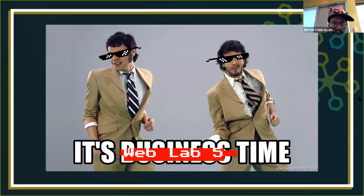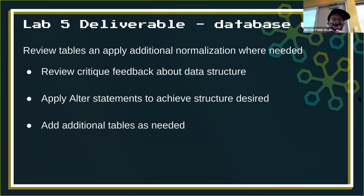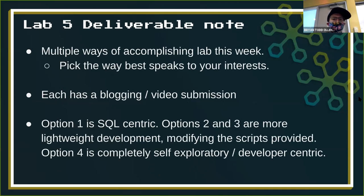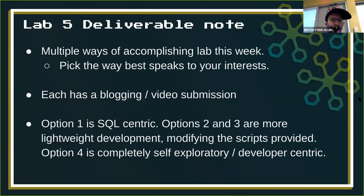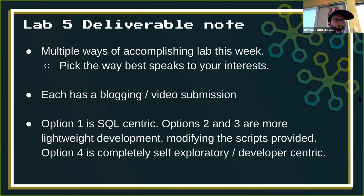So now it's Lab 5 time. The deliverable for lab five: there are multiple ways to approach this week. We covered basically four overarching themes, and any one of those four can be the way that you finish this lab. I've laid out what the four options are. I'm going to start doing this the way my IST 402 class runs — providing avenues for you to pursue the thing you want to do that's still relevant to what we've been talking about in class. Each option has a writing and a video submission component.